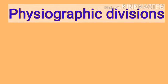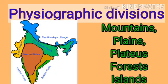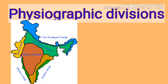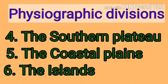What do you mean by the word physiographic divisions? India has different kinds of landforms — there are mountains, plains, plateaus, forests and islands. These are called the physical features or physiographic divisions. On the basis of physical features, India can be classified into six main regions: the northern mountains, the northern plains, the great Indian desert, the southern plateau, the coastal plains and the islands.